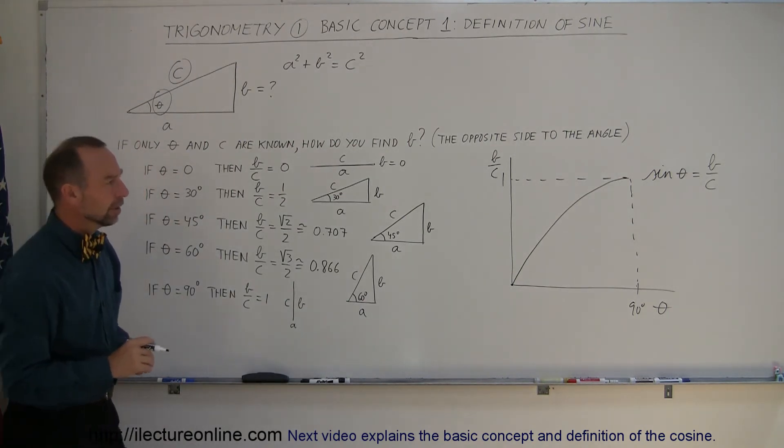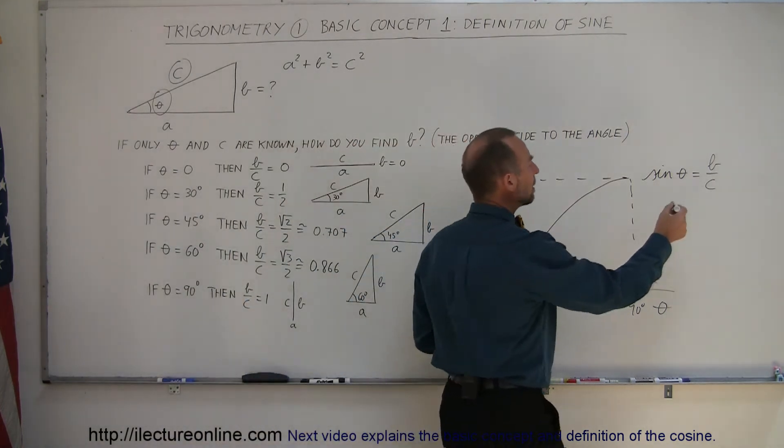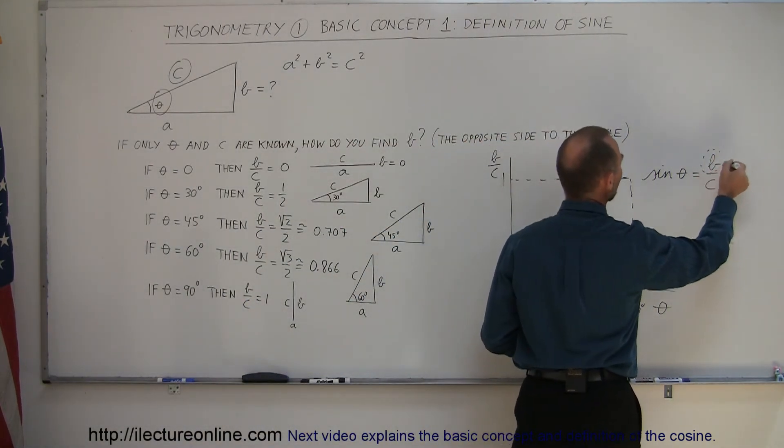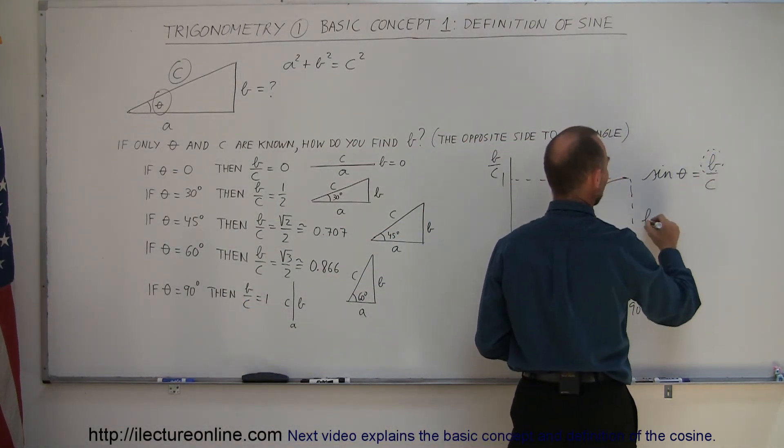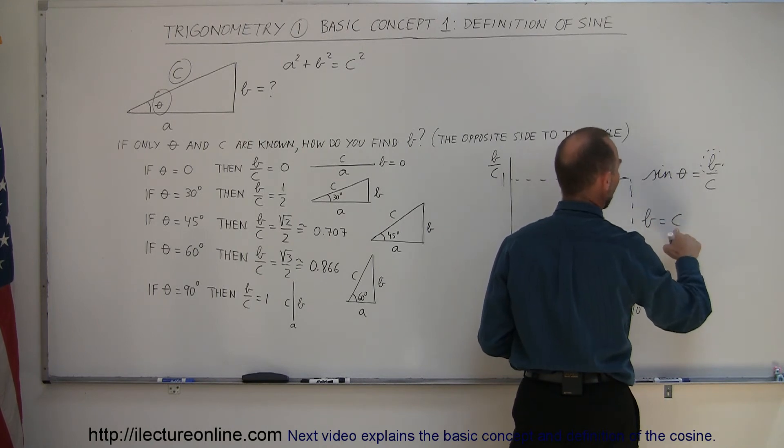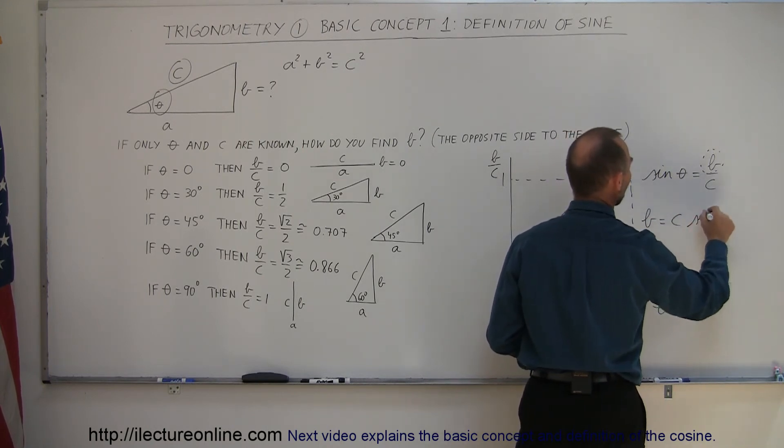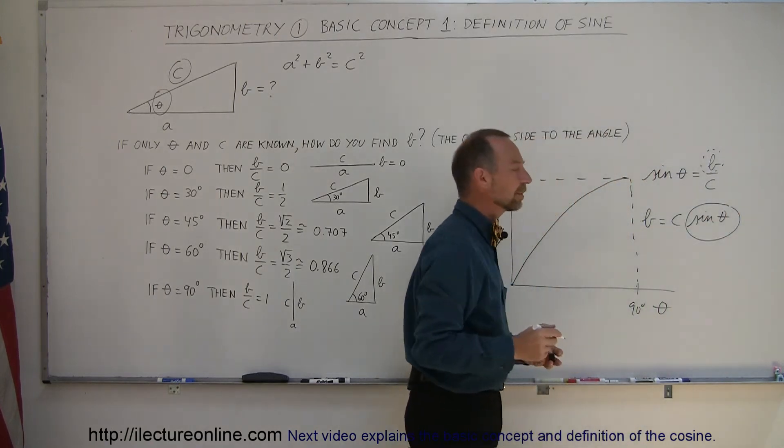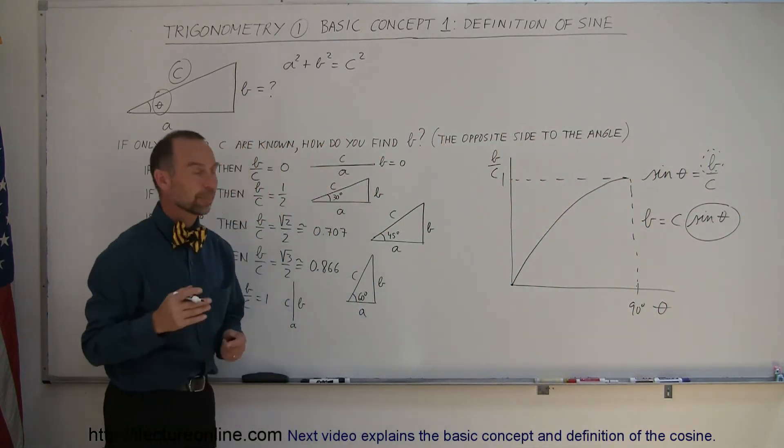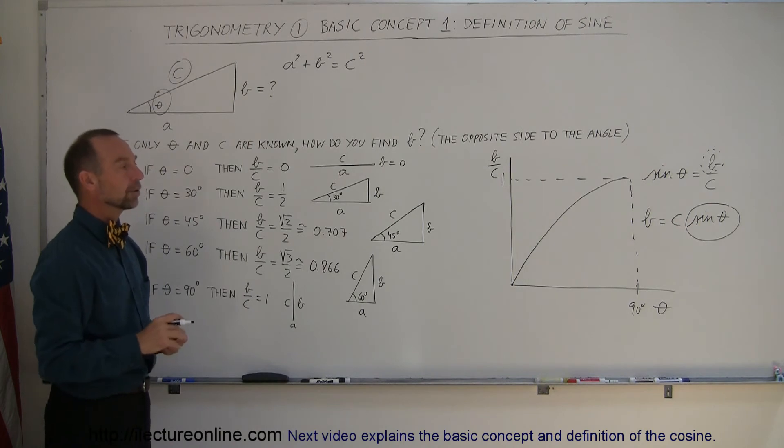If we want to find the value for B, all we have to do is solve this for B. We say that B is equal to C, which is the hypotenuse, times the sine of the angle theta. All we have to do now is find particular values for that ratio for particular values of angles.